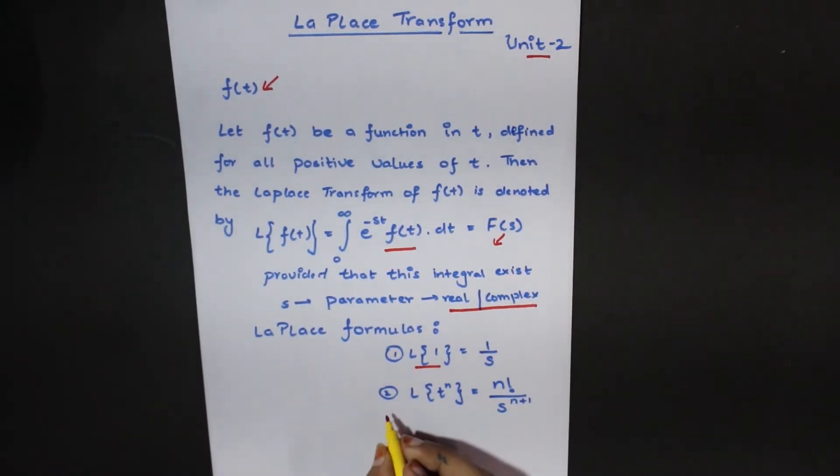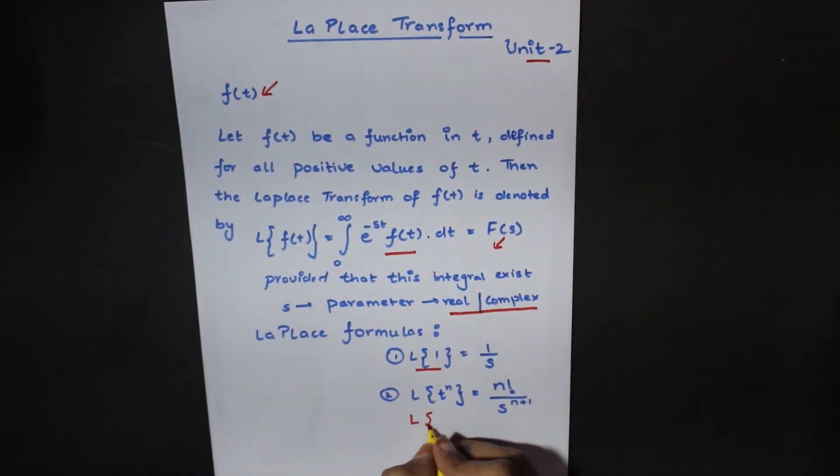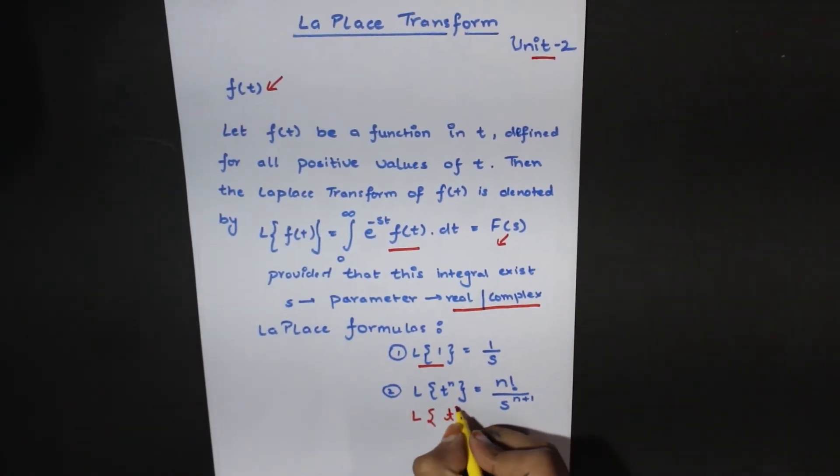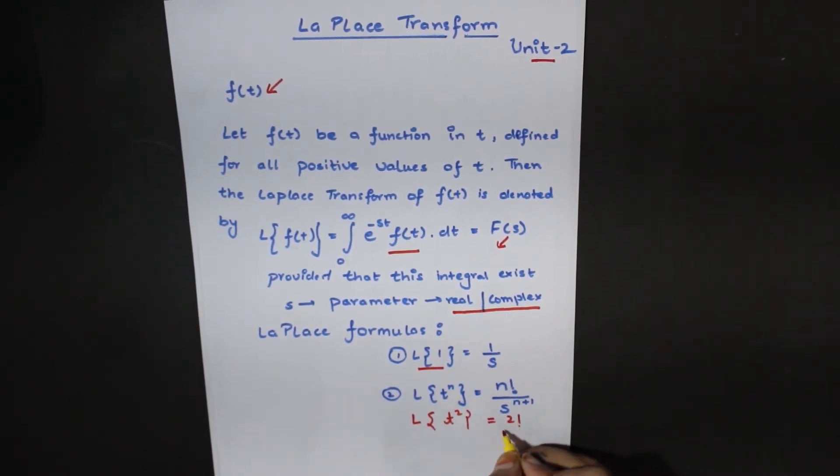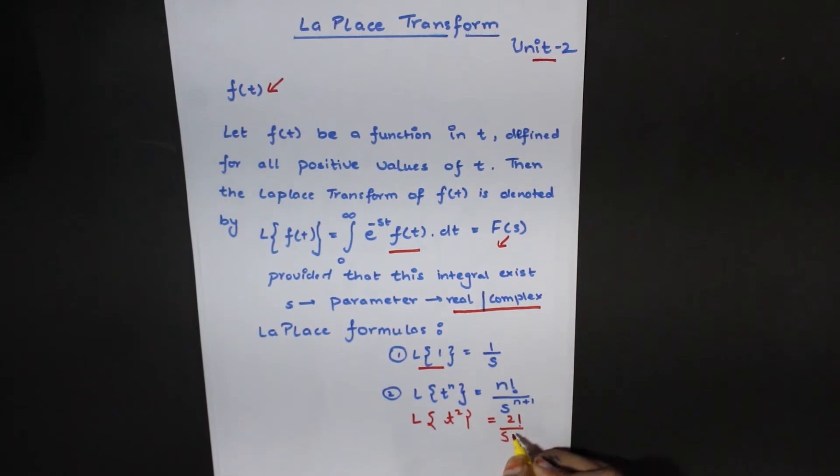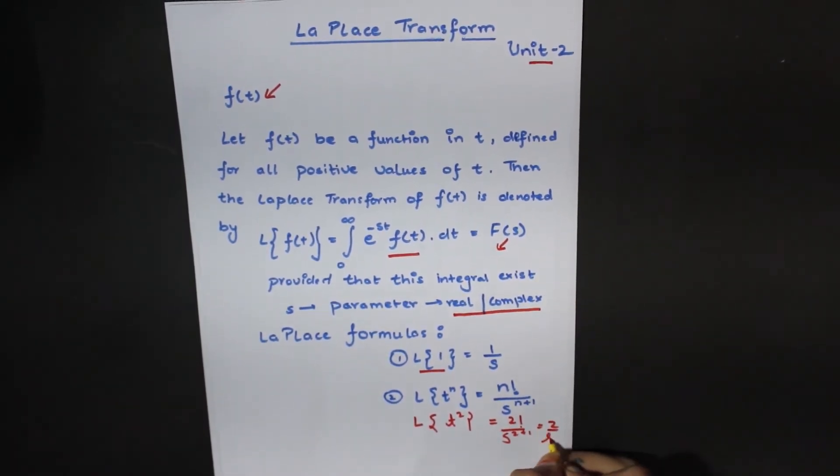The second is Laplace of t to the power n. This is n factorial over s to the power n plus 1. For example, we can take the Laplace of t square. Here n value is 2. This is 2 factorial over s to the power n plus 1. This is 2 over s cubed.